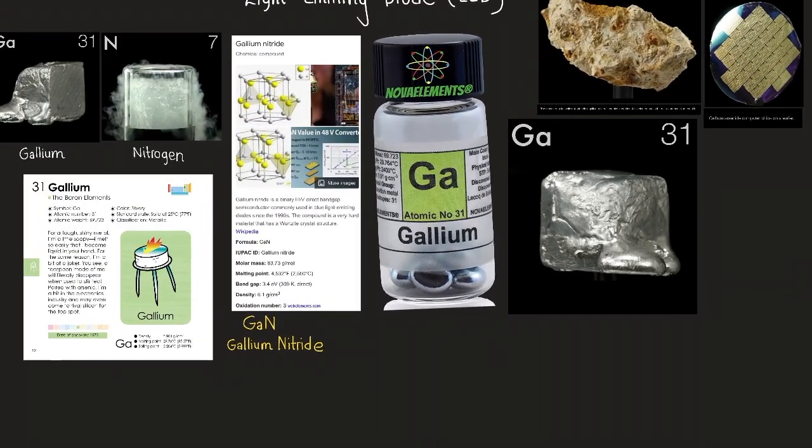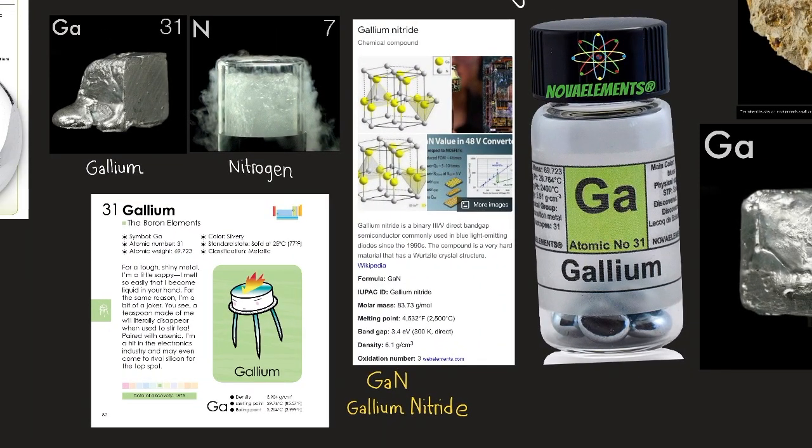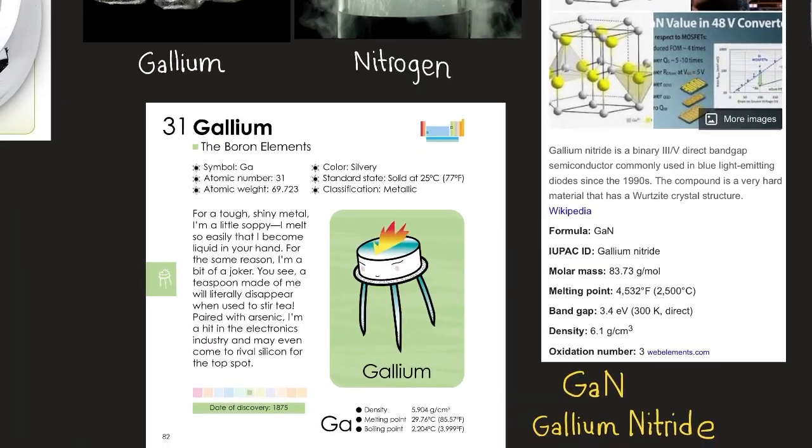Gallium element number 31, here we have gallium nitride. GaN, gallium nitride, its IUPAC ID is gallium nitride, its molar mass is 83.73 grams per mole. Here's some information on it, gallium.